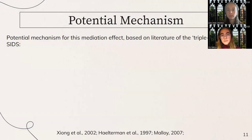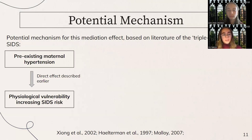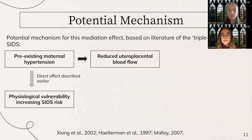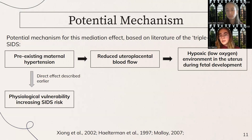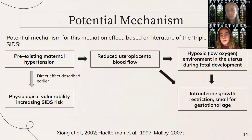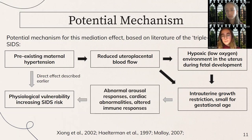We propose a potential mechanism for this mediation effect based on prior literature, specifically the triple risk model. Pre-existing maternal hypertension has direct effects on physiological vulnerability, which increases SIDS risk. It also reduces utero-placental blood flow, which causes a hypoxic environment in the uterus during fetal development. Both the hypoxic environment and reduced utero-placental blood flow can contribute to intrauterine growth restriction, leading to births small for gestational age. This can then cause abnormal arousal responses, cardiac abnormalities, and altered immune responses, which contribute to heightened physiological vulnerability, increasing the odds and risk for SIDS.